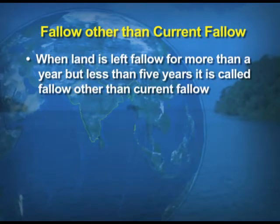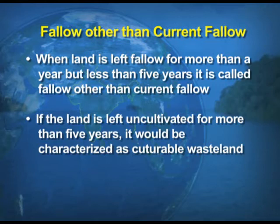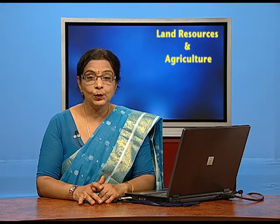The next category is fallow other than current fallow. When the land is left fallow for more than a year but less than five years, it is called fallow other than current fallow. If the land is left uncultivated for more than five years, it would be characterized as culturable wasteland — meaning we consider that land as not fit for cultivation.